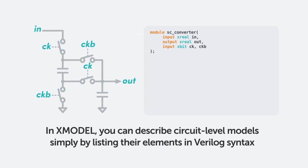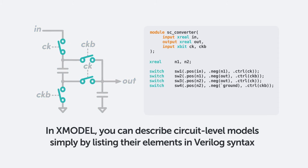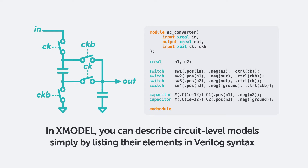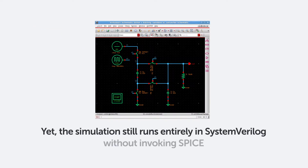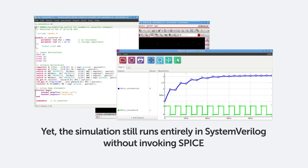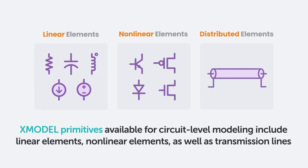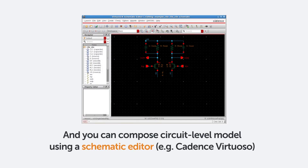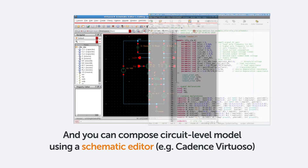In XModel, you can describe circuit-level models simply by listing their elements in Verilog syntax. Yet the simulation still runs entirely in SystemVerilog without invoking SPICE. The XModel primitives available for circuit-level modeling include linear and non-linear elements as well as transmission lines. And you can compose circuit-level models graphically using a schematic editor.